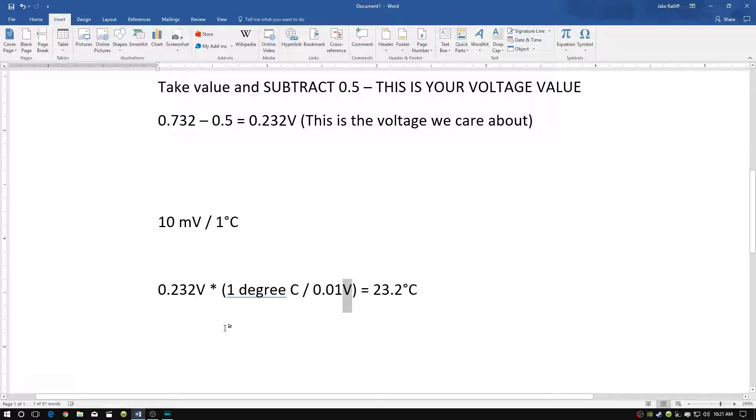So it's 0.232 volts divided by 0.01 volts. And when those cancel out, we're going to be left with degrees C. And this number, in this case, turns out to be 23.2 degrees Celsius.